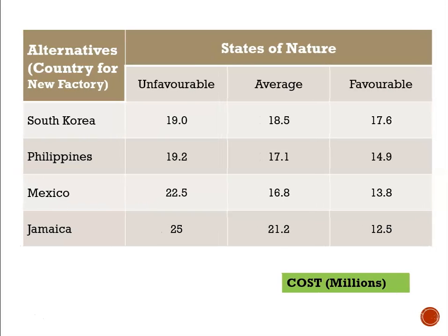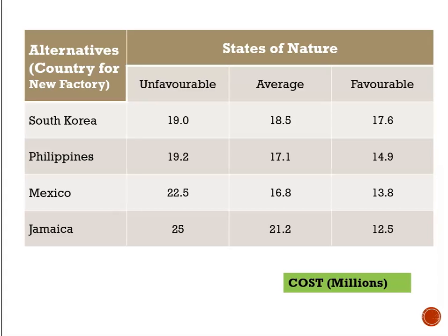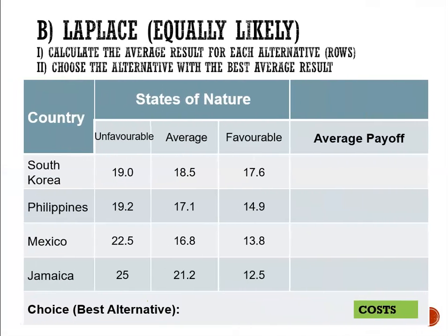Here we have a payoff table where the figures represent costs in millions. Our alternatives are the countries to build our new factory, and the choices we're looking at are South Korea, Philippines, Mexico, or Jamaica — we call those our decision alternatives. For Laplace, step one is to calculate the average result for each alternative.